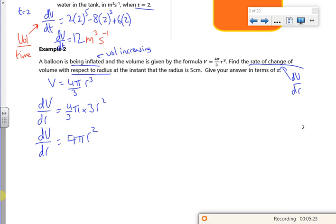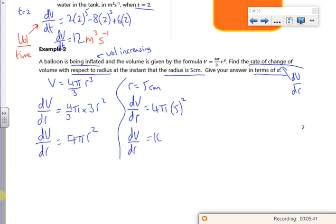Now it tells me when the radius is 5, and to give the answer in terms of π, so when r is 5 centimeters, dv dr is 4π times 5². So dv dr is 100π. Once again, think about your units. The units are volume over length. So the volume is going to be centimeters cubed over centimeters. So that's just going to be centimeters squared, changing your volume with respect to your radius. Some people write it as centimeters cubed per centimeter, which is kind of technically true.